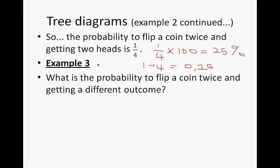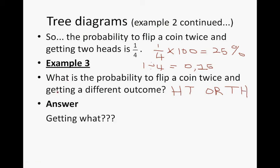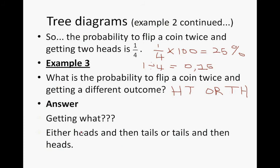Example 3: What is the probability of flipping a coin twice and getting a different outcome? A different outcome means you either get heads then tails, or tails then heads — so either heads-tails or tails-heads.